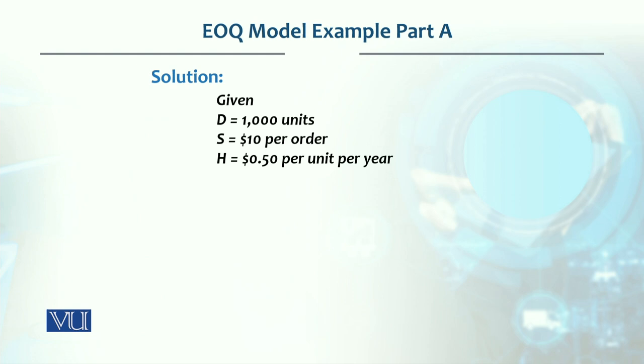Now we need to find what the order quantity should be. D is 1000 units, that is annual demand. The annual demand is what we always use in this model — we do not use weekly, daily, or any other period's demand. In this model, it will always be annual demand.